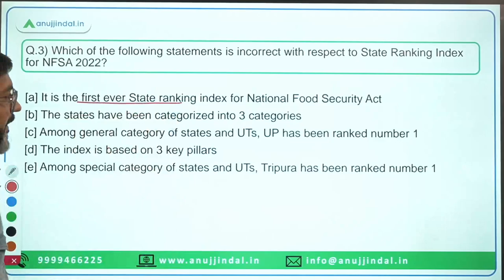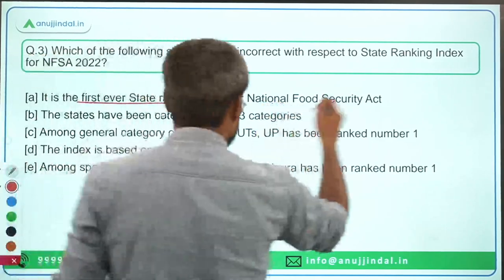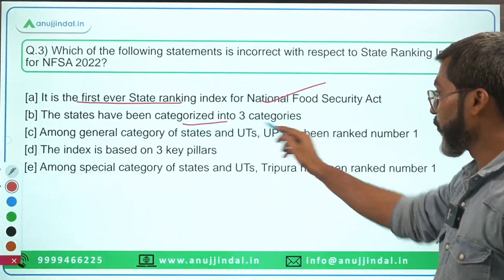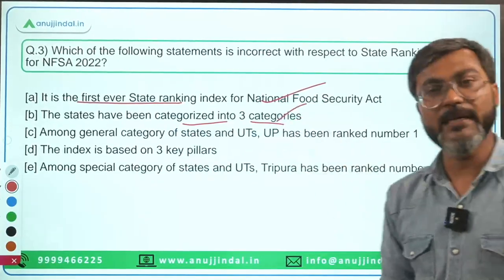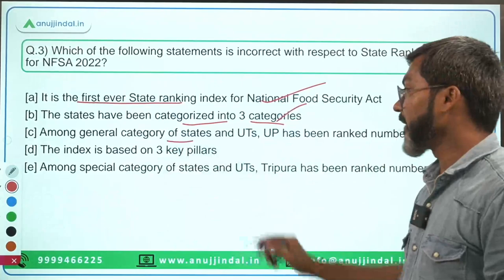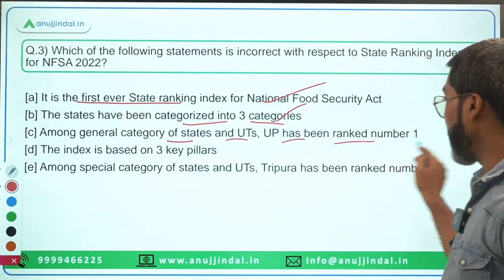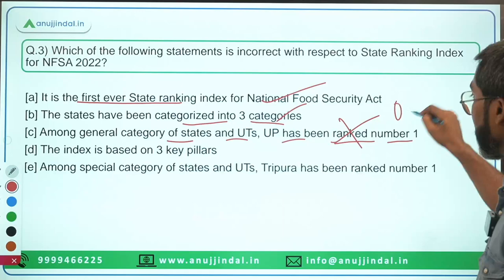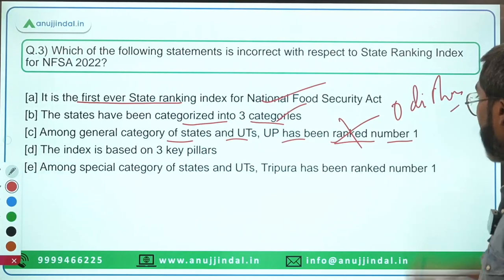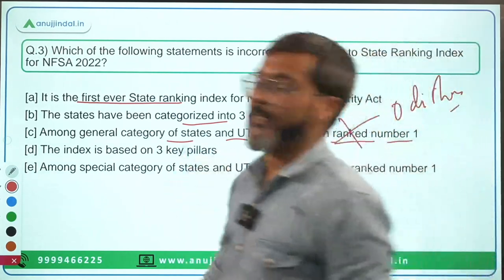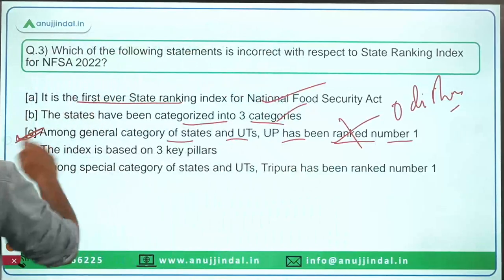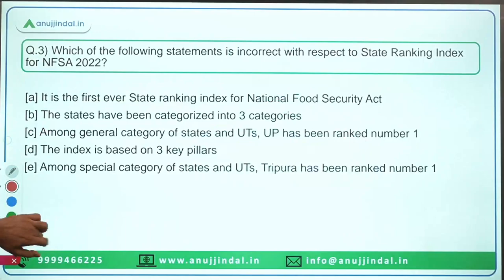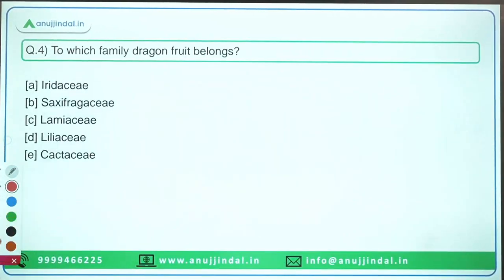Coming back to the question — it is the first ever State Ranking Index for NFSA, which is correct. The states have been categorized into three categories, which is correct. However, the statement that UP has been ranked number one among general category states is incorrect — it is Odisha that was ranked number one. So the incorrect statement is the answer, and we move to question number four.